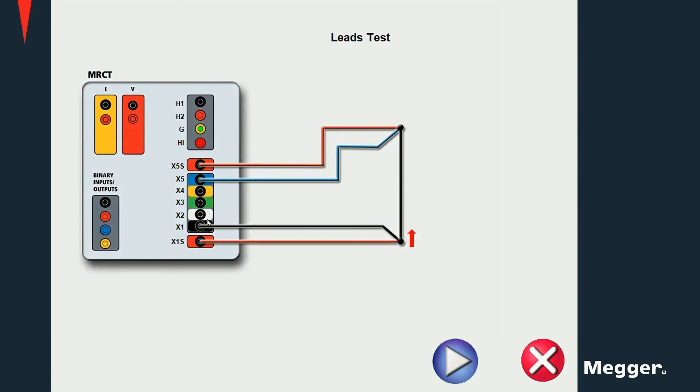A procedure that is sometimes necessary is the leads test or zeroing the leads. For this, short the secondary terminals, a DC current is injected into them, and the resulting voltage drop is measured, which allows us to calculate the resistance of the leads.